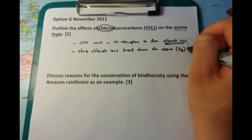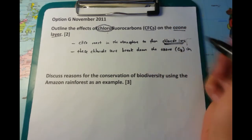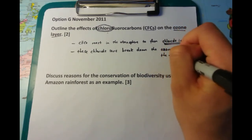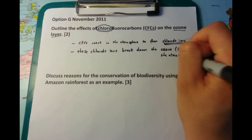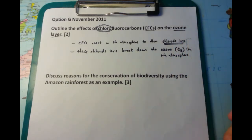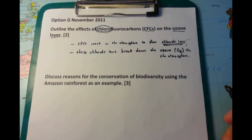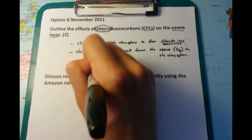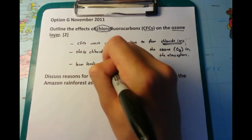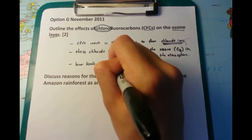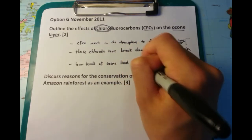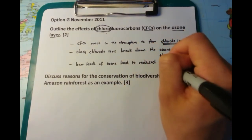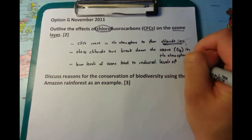You might think that's fine — but what does O3 do? Well, the ozone actually absorbs UV radiation from the sun. If you have insufficient levels of ozone, you'll have more UV radiation getting into the Earth's atmosphere. And this is bad for your skin, this is bad for increasing heat levels, and this leads to the effect of global warming as well.